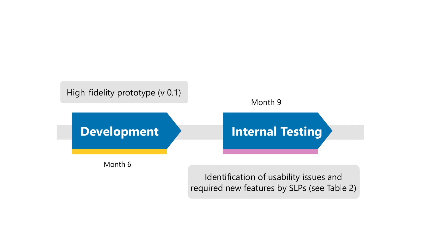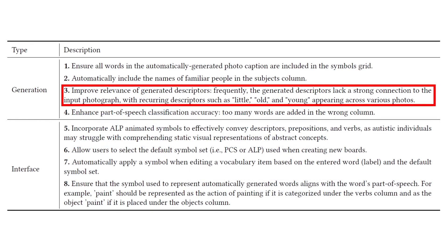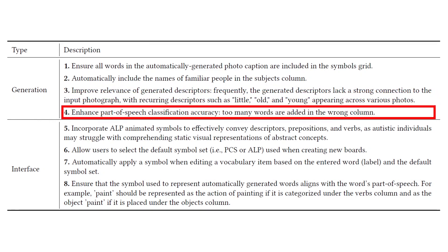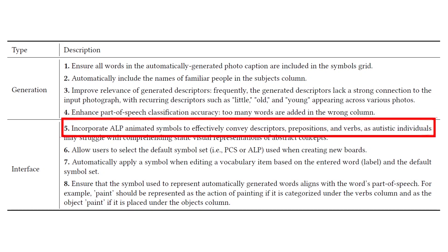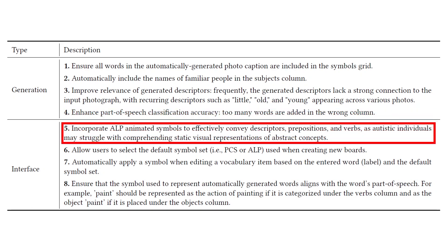Once the HCI researcher developed a high-fidelity prototype that replicated the initial design, the SLPs tested the application by themselves to investigate whether the envisioned features were correctly implemented and to explore the quality of vocabulary generated. The main concerns were related to the relevance of vocabulary generated, the automatic part-of-speech classification, and the need for having animated symbols to convey descriptors, prepositions, and verbs, as autistic individuals may have difficulties comprehending static visual representations of abstract concepts.